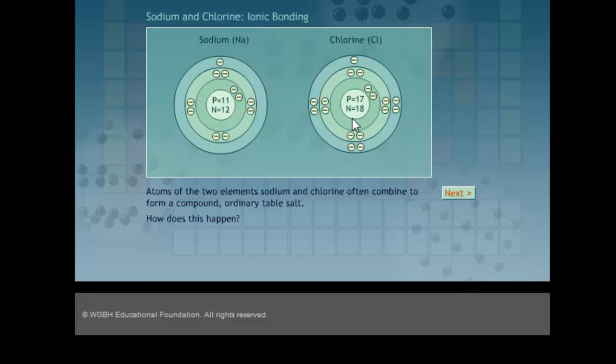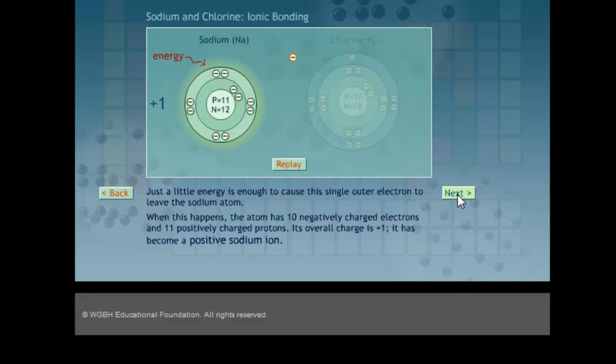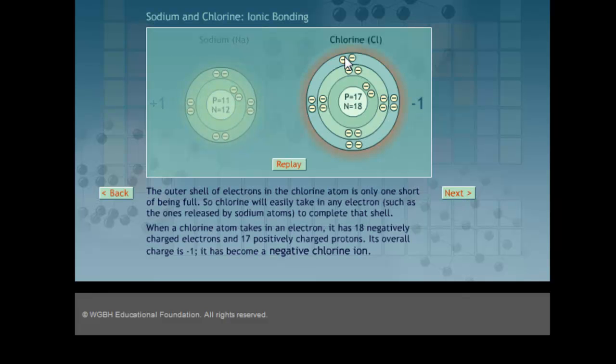So, these two atoms come together. This is weakly held on by the protons in the nucleus for the sodium. It gets ripped away and stolen by the chlorine. The chlorine steals this electron away, making its electron shell happy, and the valence electron shell over here in the sodium happy.